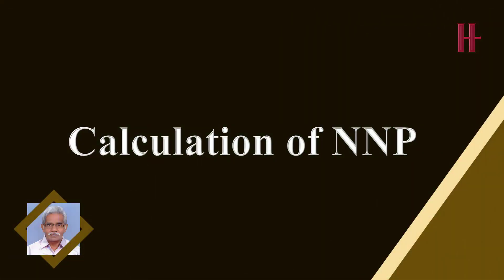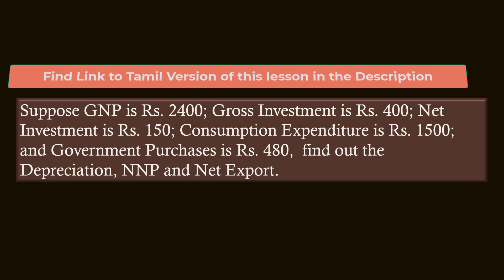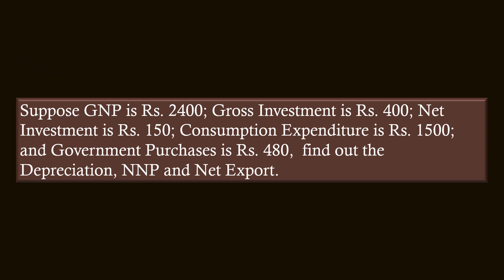A National Income Problem. One of my viewers requested a solution to a national income problem, and I am offering the solution for the benefit of all students. The problem: Gross National Product is 2400 rupees, Gross Investment 400 rupees, Net Investment 150 rupees, Consumption Expenditure 1500 rupees, and Government Purchases 480 rupees. Find out depreciation, net national product, and net export.